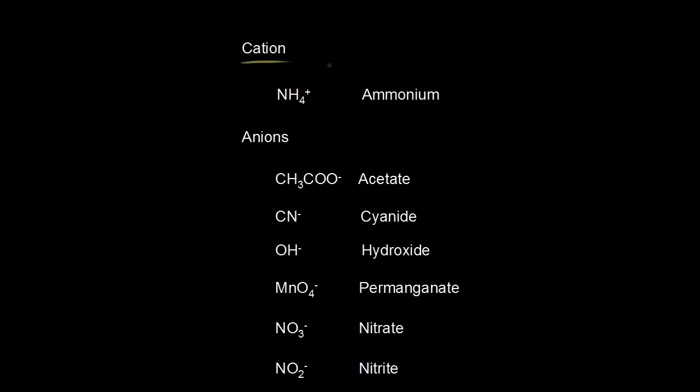We'll start off with cation here, so a positively charged ion. NH4 plus is called the ammonium ion. And for anions, there are many anions that you should know. CH3COO minus is the acetate anion. CN minus is the cyanide ion. OH minus is the hydroxide anion.